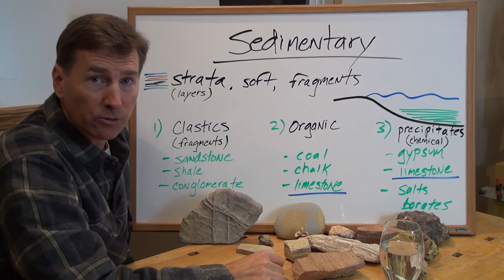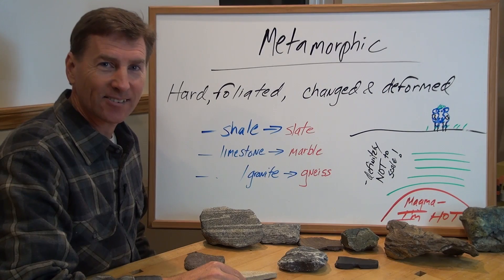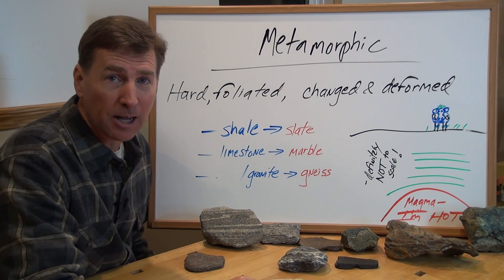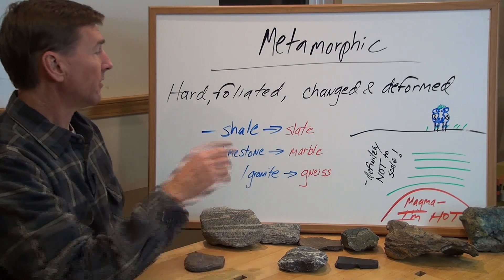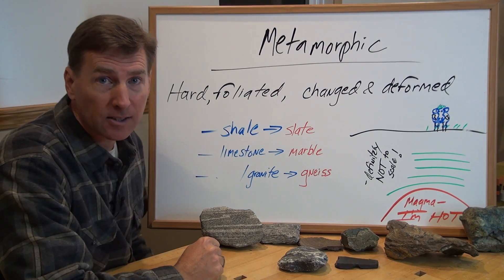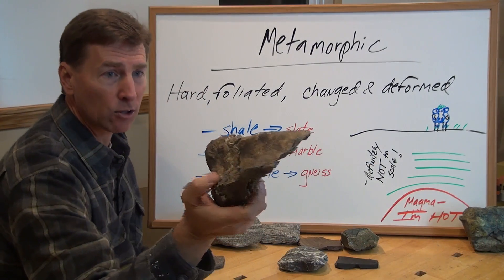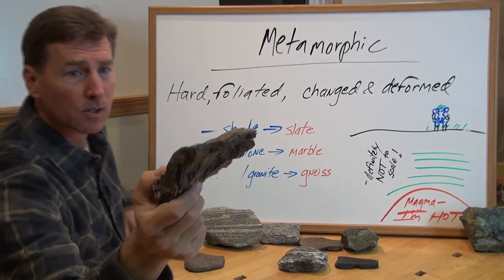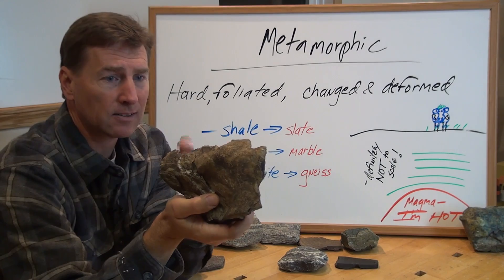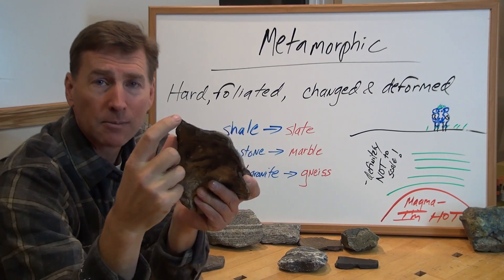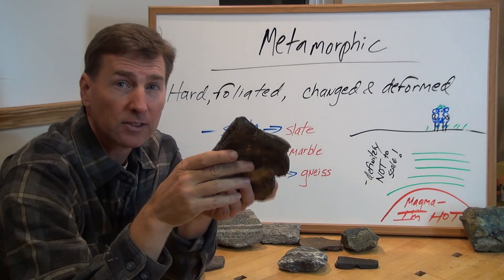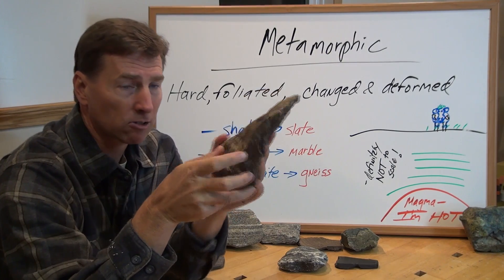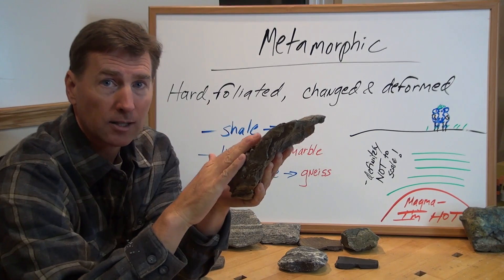Let's move on to metamorphic rocks — our final category. A few things about metamorphic rocks: basically they are hard and they are foliated. Here's one of my favorites — I call it the dino claw. You can see how it is very foliated, meaning it's got these layers, and it's very hard. Why would you see such a sharp edge after all these years? I found this in the California coast range. It's hard, it's foliated — it's a metamorphic rock.